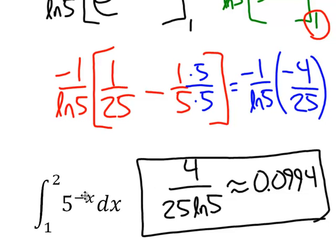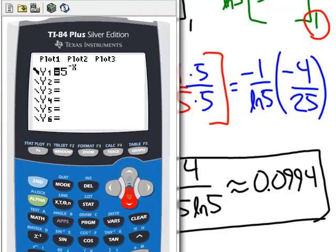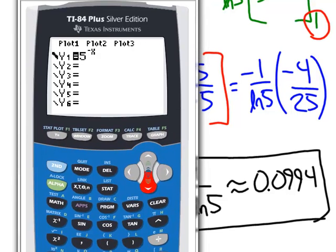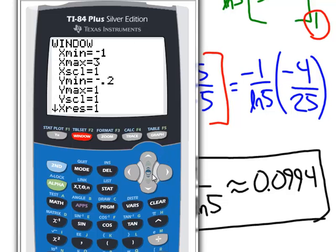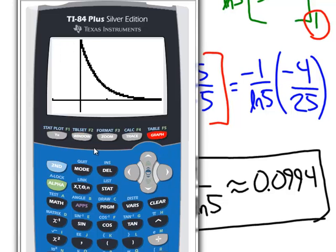So, we'll remind ourselves what the original integral was. It's from 1 to 2, underneath the curve, 5 to the negative X power. Pull up the calculator. And even though there is the definite integral function or feature on this calculator, I always prefer to just do this graphically, and I think there's something beneficial to that. These window settings seem to work pretty well for this particular exercise.